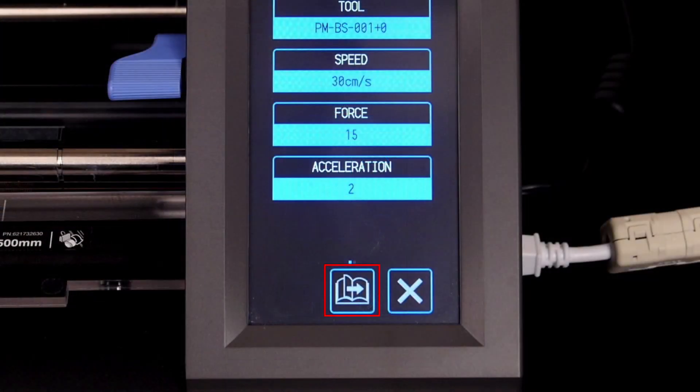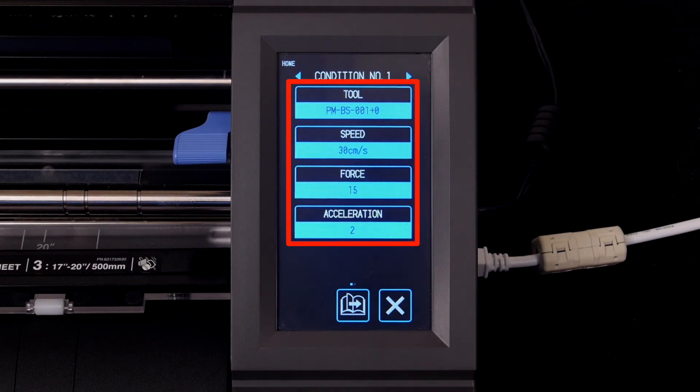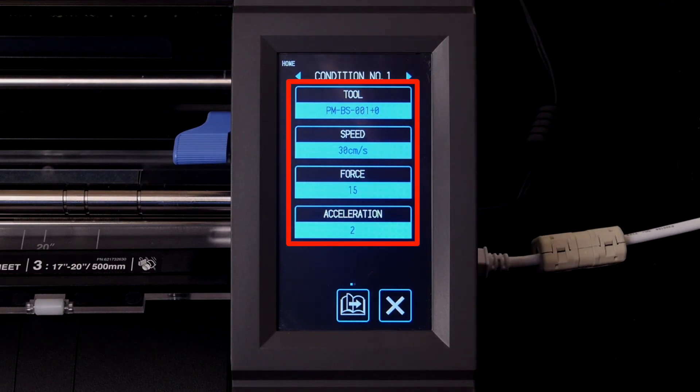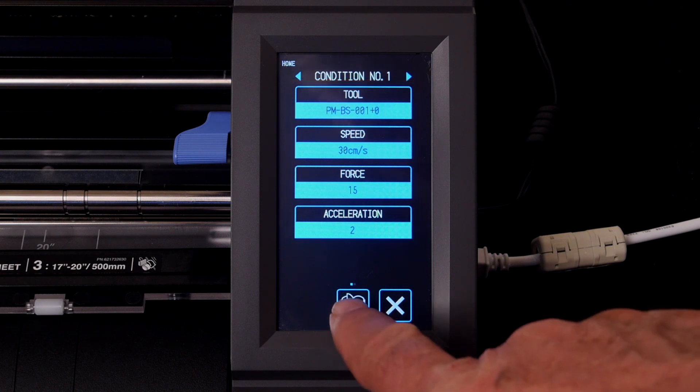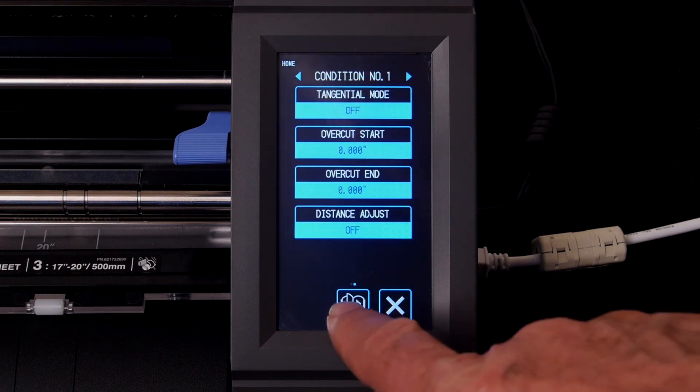Some menu screens will display the next page button, which indicates that there is more than one page of options. For instance, displayed here are four options of cut settings for a condition. But when we press this next page button, it will advance to another page of cut settings that we can use as well.